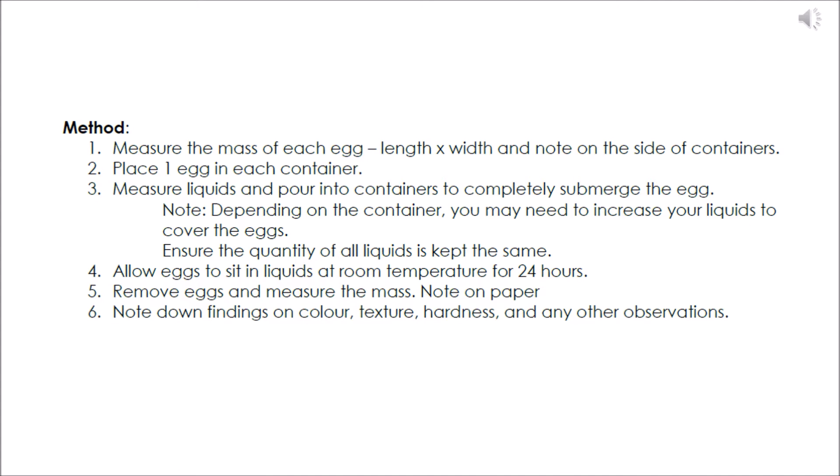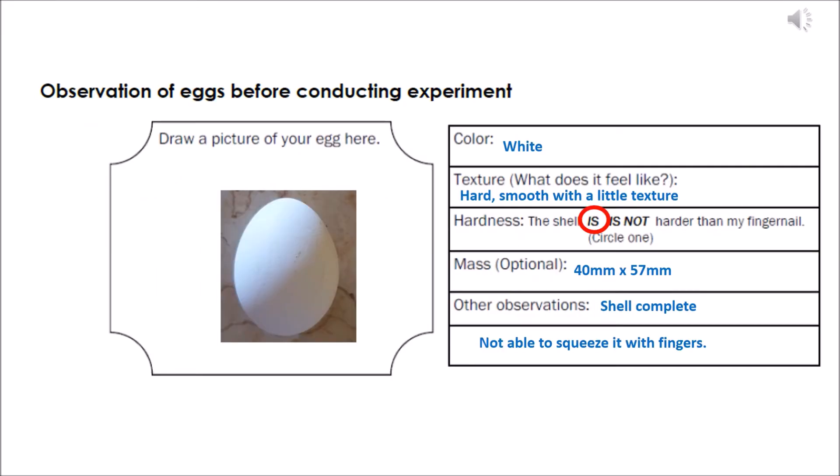Six, note down findings on color, texture, hardness, and any other observations. Here we have the observation of eggs before conducting the experiment. So my egg is white. The texture is hard and smooth, but there's a little bumpy texture on it.